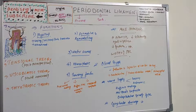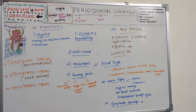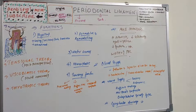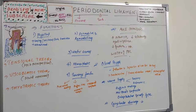Summary of functions: five types — physical, formative/remodeling, nutritional, homeostatic, and sensory. Three theories of force transmission: tensional theory, viscoelastic theory, and thixotropic theory. The most accepted is the viscoelastic theory, which states that fluid movement is the primary cause of force transmission.